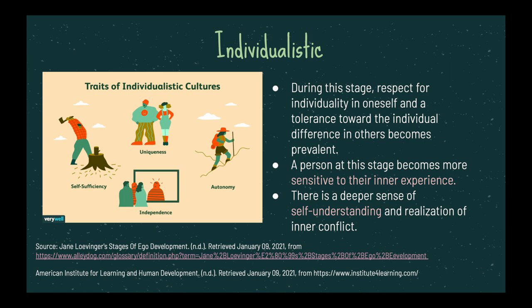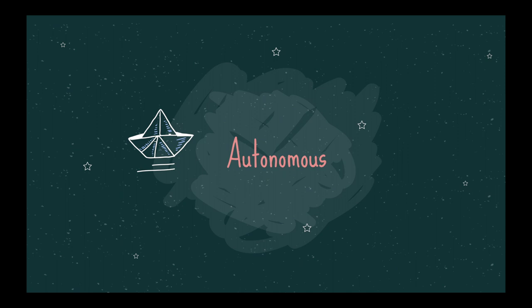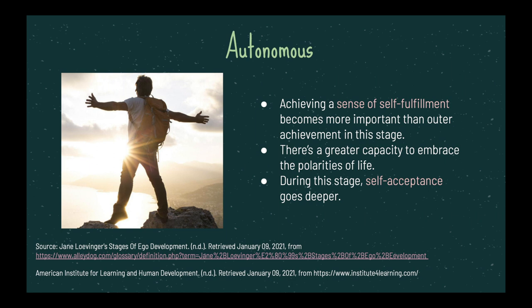Now one of the final stages, which is called the autonomous stage. Achieving a sense of self-fulfillment becomes more important than outer achievements in this stage. There is a greater capacity to embrace the polarities of life, and self-acceptance goes deeper. Once you have separated yourself from societal influences and reflected more, the importance of wealth or material possessions starts to decrease, and therefore your ego starts to decrease, allowing you to come closer to achieving self-fulfillment.